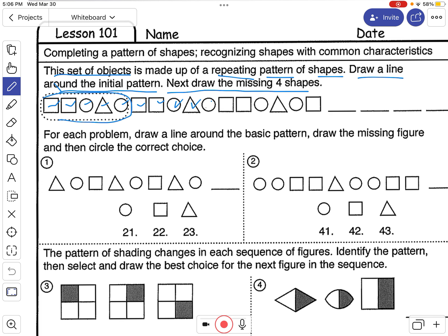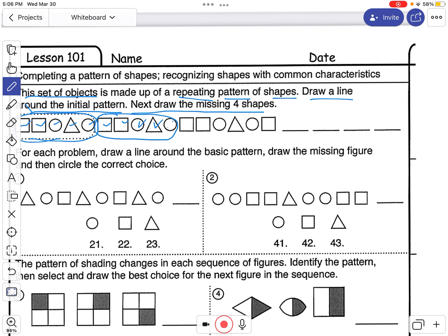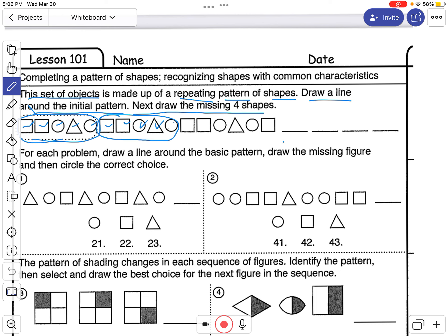So we draw a line around the pattern right there. Then the next part of the pattern is going to be the other repeating part. Square, square, circle, triangle, circle. Draw a circle around that. Can you draw a circle around the next part and the next part? And then fill in these four missing shapes.